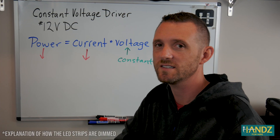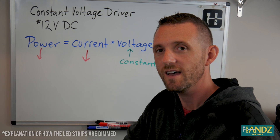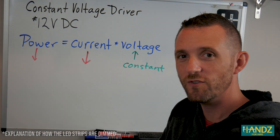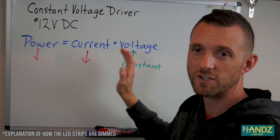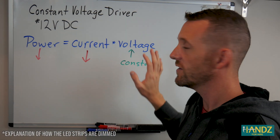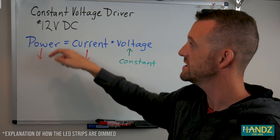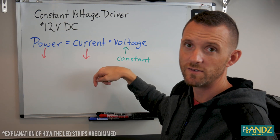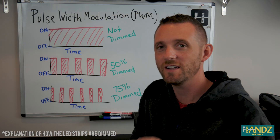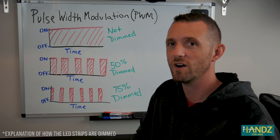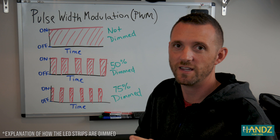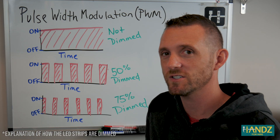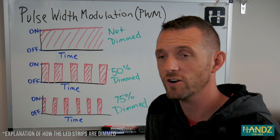The transformer we're using is a constant voltage driver, which means that through the LED loop it's 12 volts at all times. If we look at our physics equation — power equals current times voltage — the voltage is constant, so in order to decrease the power or dim the lights, the current has to decrease. In order to bring down the current, the LED driver uses something called pulse width modulation, or PWM. What that means is the driver controls the amount of time the circuit is on and off to regulate the amount of current.